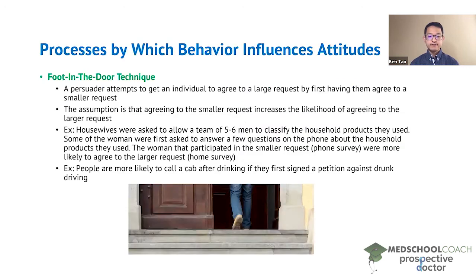The foot-in-the-door technique is when a persuader attempts to get an individual to agree to a large request by first having them agree to a smaller request. The idea is that if you can get a person to agree to a small request, then they will be more likely to agree to a larger request.